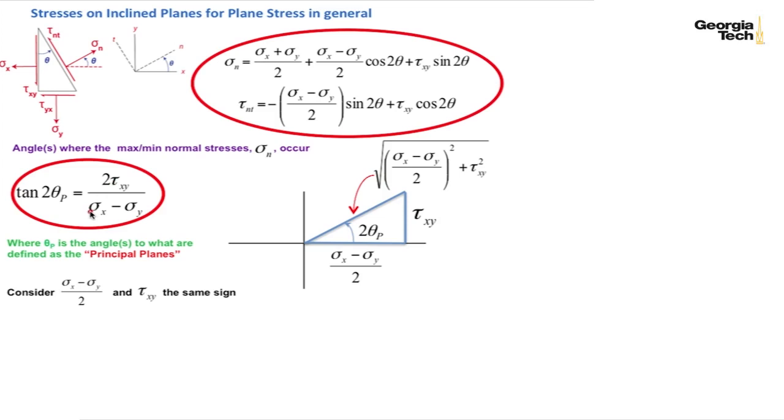And so let's now consider both tau xy and sigma x minus sigma y over 2 being the same sign. So let's first consider them to both be positive as I've shown here. And if they're going to both be positive we see that 2 theta sub p has to be between 0 and 90 degrees.